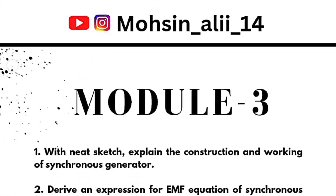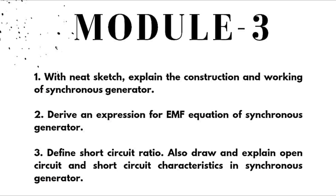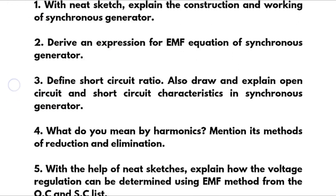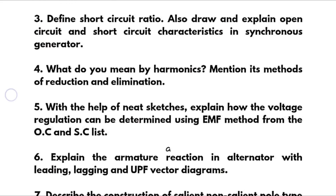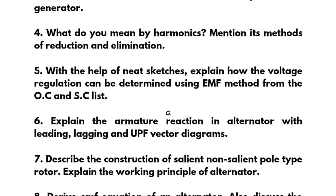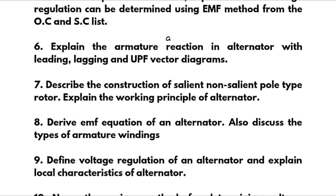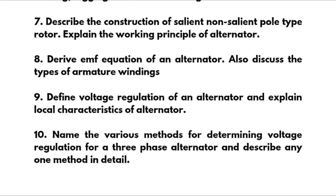Module 3 questions: explain the construction and working of synchronous generator with a neat sketch; derive the EMF equation of a synchronous generator; define short circuit ratio; draw and explain open circuit and short circuit characteristics; harmonics and methods of reduction and elimination; voltage regulation using EMF method from OC and SC tests; armature reaction in alternator with leading, lagging, and unity power factor vector diagrams; construction of salient and non-salient pole type rotors; working principle of alternator and EMF equation; types of armature windings; define voltage regulation and load characteristics; and methods for determining voltage regulation for a three-phase alternator.